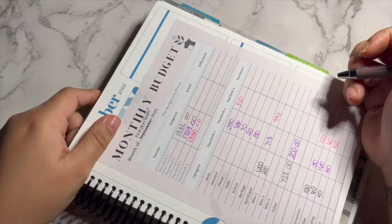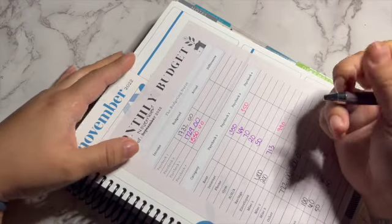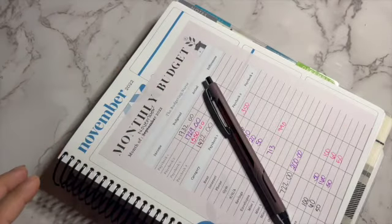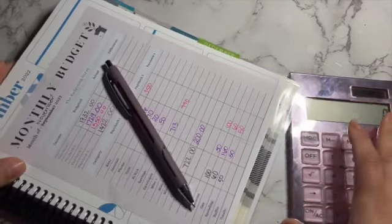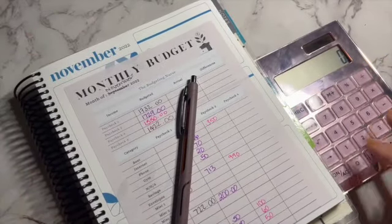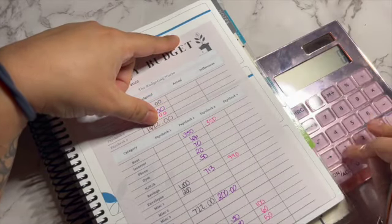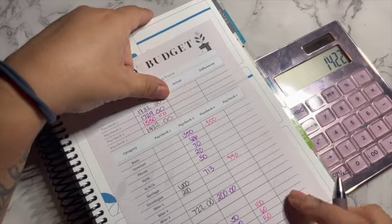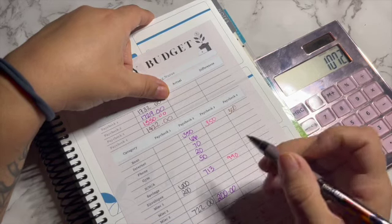Let's start budgeting out my paycheck. For this week I made $1,422. Let me get my calculator. We're gonna do this on paycheck number four. I do budget out $350 for my rent, so I have $1,072 left.